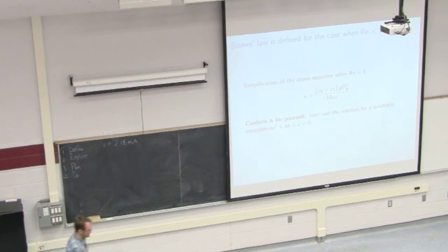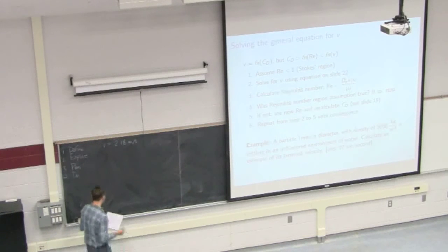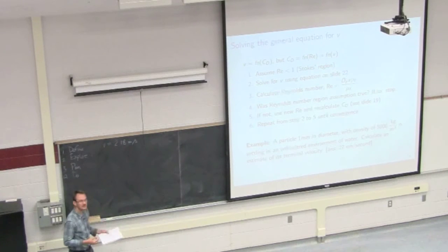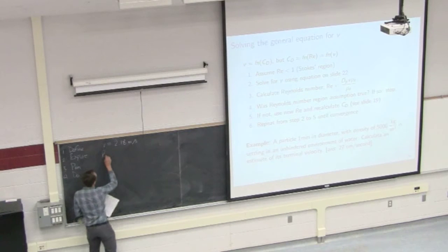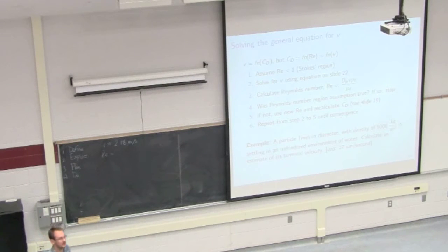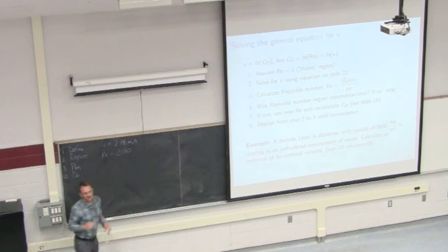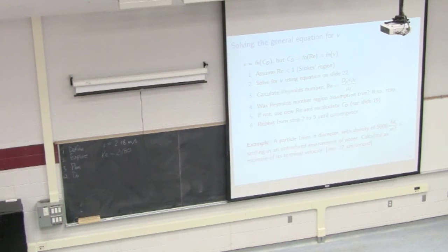So we've got that velocity. Our plan is, the next step is to calculate the Reynolds number to make sure that assumption was valid. If you do that, you calculate the Reynolds number is 2180. Clearly we're violating that assumption, we're not in that region.